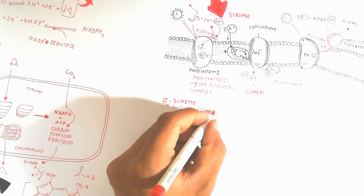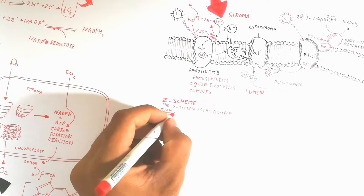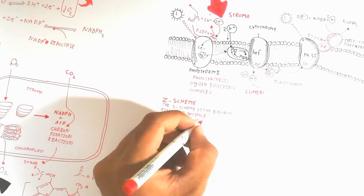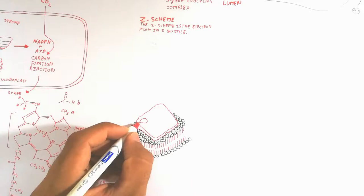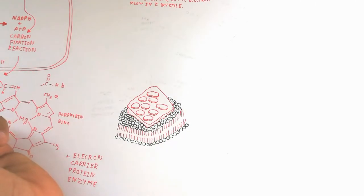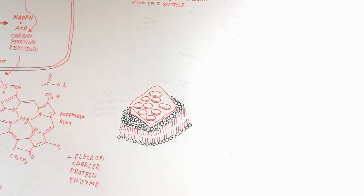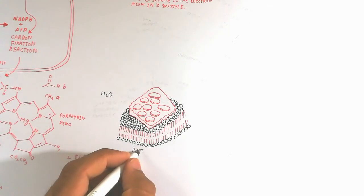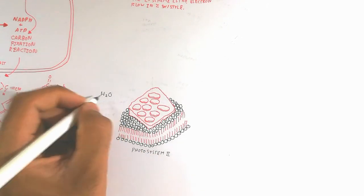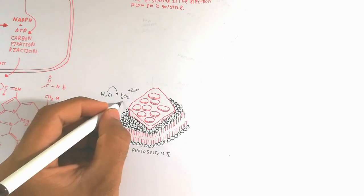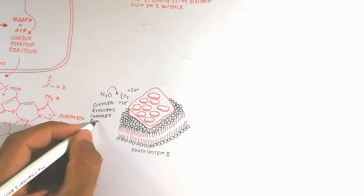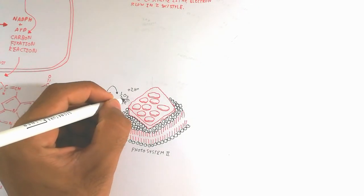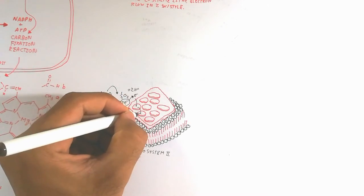Now we will discuss the Z scheme model, which is important because the electron flow traces a Z-shaped path. In Photosystem 2, molecules of chlorophyll absorb different ranges of light. Water is split into oxygen, protons, and electrons. The electrons go inside the photosystem and oxygen is released from the stomata.